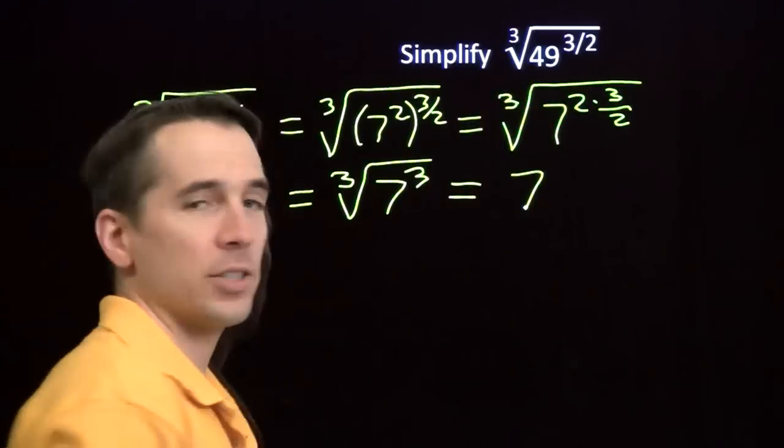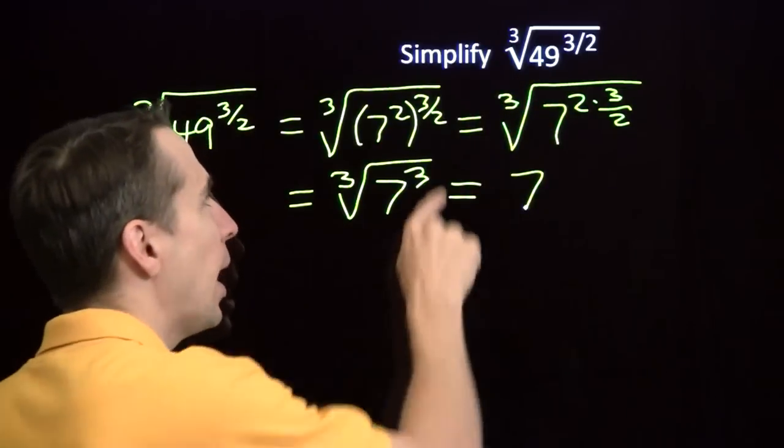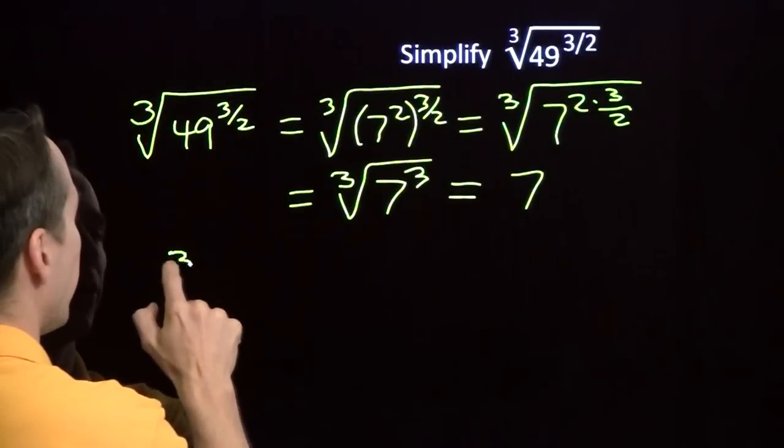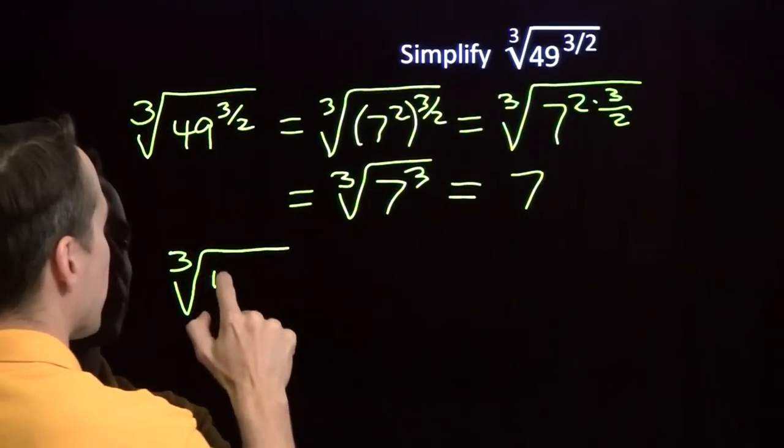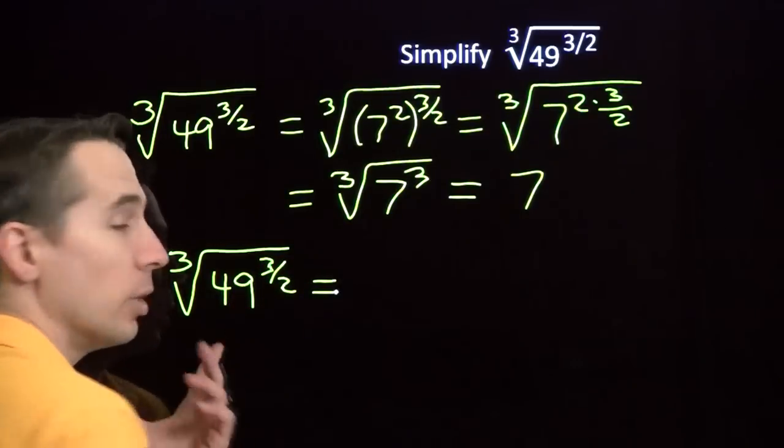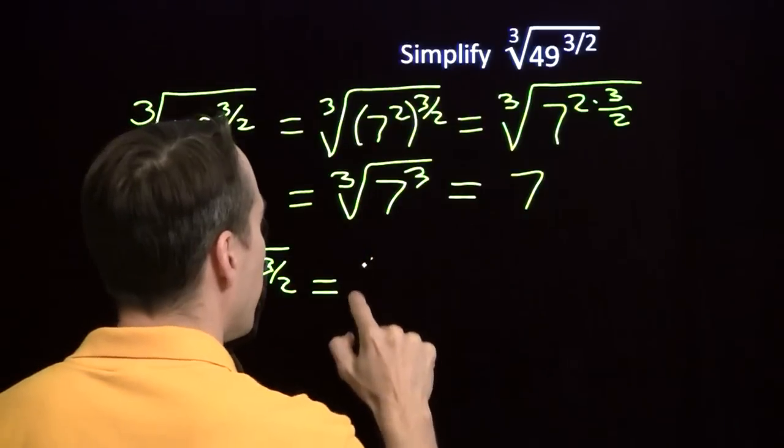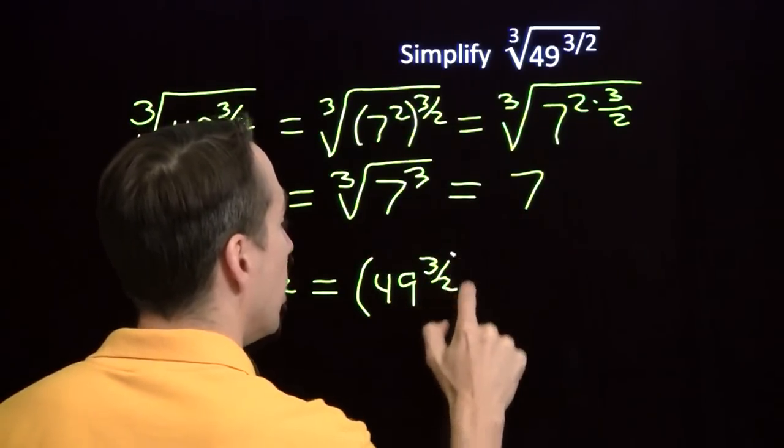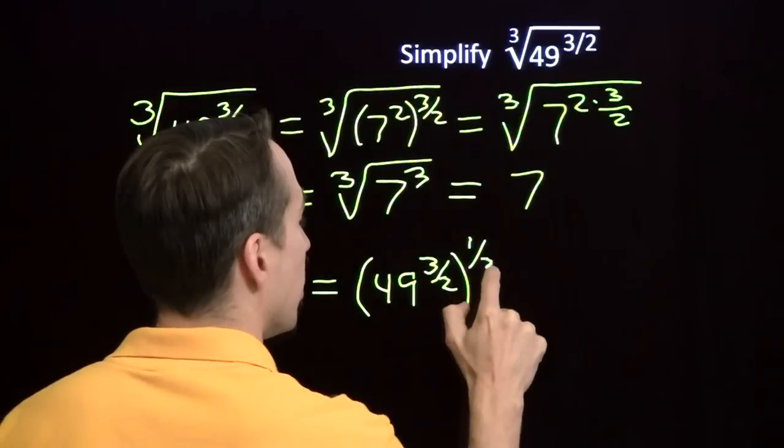Now there, we focused on the fractional exponent first. Now let's see what happens when we focus on the radical first. We'll focus on the radical by turning it into a fractional exponent. And we know how to handle that. The cube root of any number is just that number raised to the 1 3rd power. So we'll just take this and raise it up to the 1 3rd power.